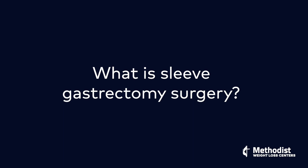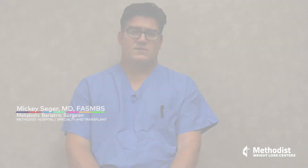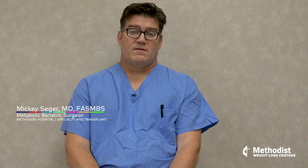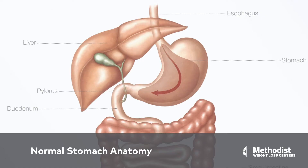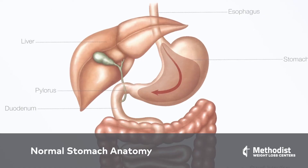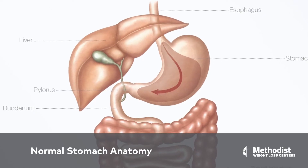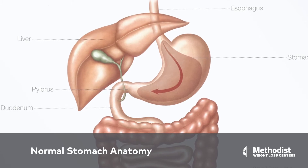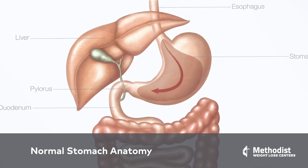Sleeve gastrectomy is actually the most popular operation for obesity treatment. It involves removing part of the stomach. The stomach normally looks like a partially deflated football, and what we do in this operation is we make it into a slender tube.